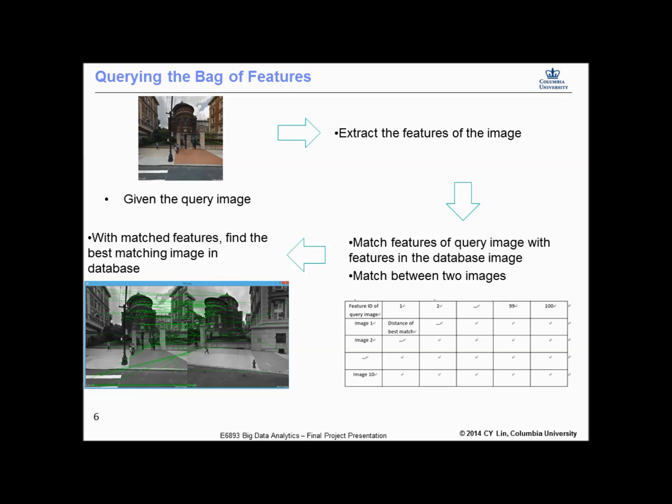Now suppose we have some query image, and we've extracted all the descriptors from it. We can then very efficiently hash each of those features, and see which bag in the bag of features they belong to in our hash tables.